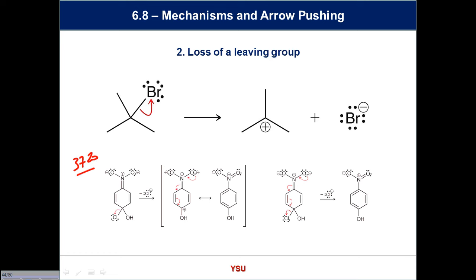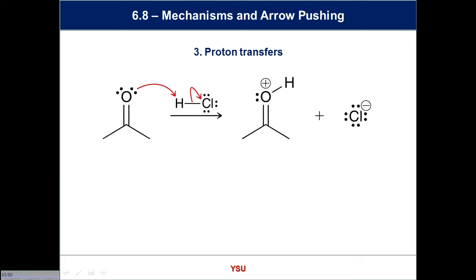We can make this as complicated as we want — don't worry about the complex examples just yet; that's for second semester. But this indicates where we need to be for the second term. In a more complex six-membered ring system I can show exactly the same thing: a leaving group breaking off. If I'm talking about different resonance structures I have to be very careful about the number of arrows I use to keep track of all the electrons. Loss of a leaving group is the second type of arrow.